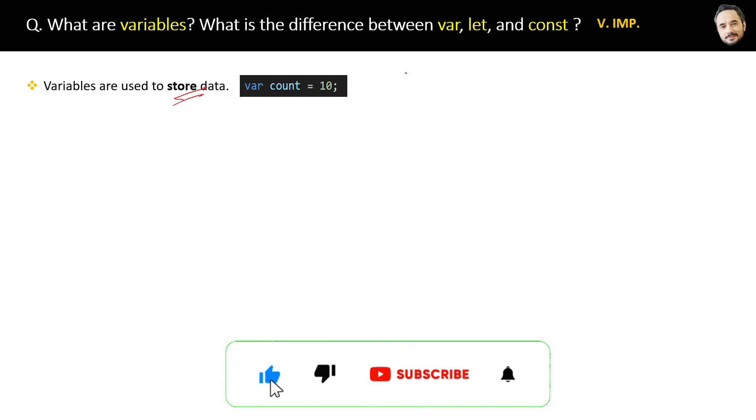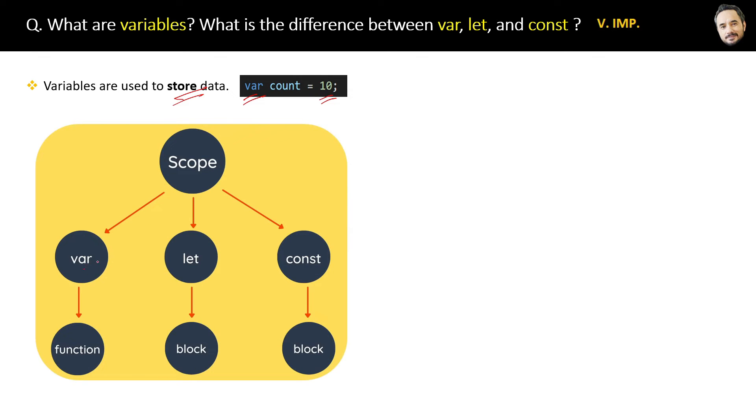For example, here 10 is the data or value and we use the var keyword to store it. Similarly, other than var, we can also use the let and const keywords to store the data. The scope of a var variable is inside the whole function.